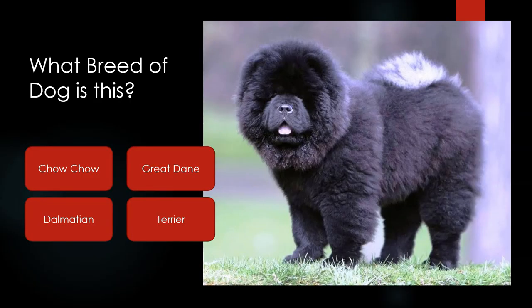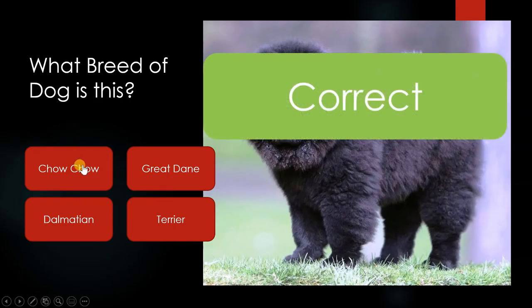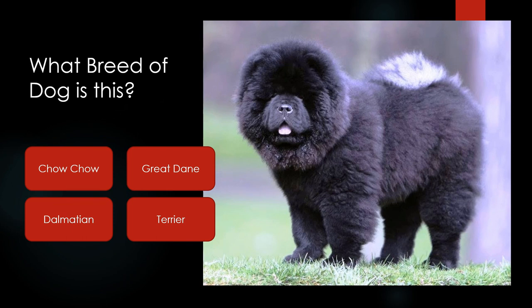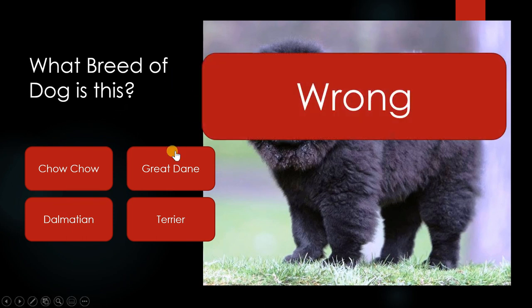Now when I run this — using Shift+F5 — if I click on Chow Chow it comes up correct. If I go back and click on Great Dane, it comes up wrong. I can use the arrow keys to go back and forward.